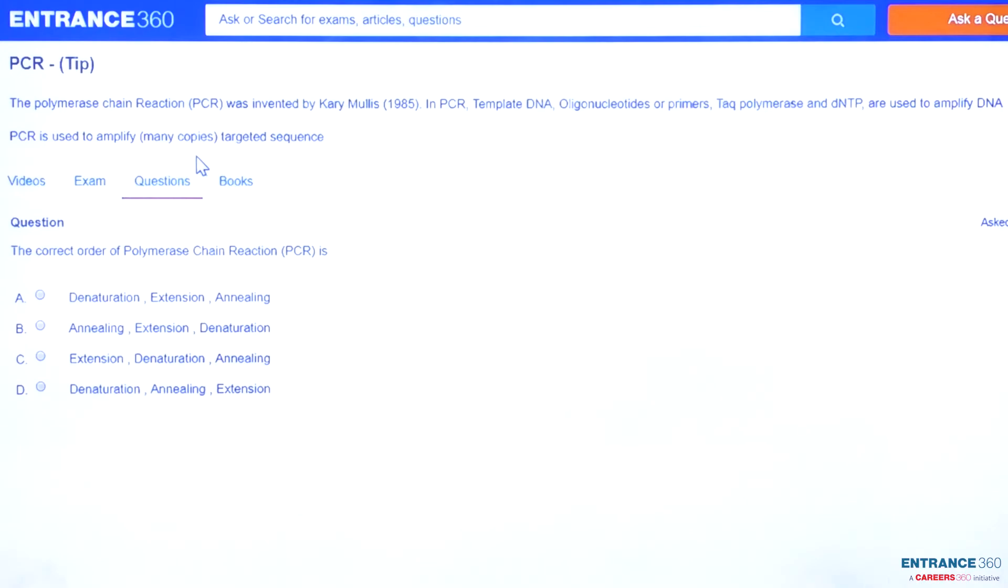First one is denaturation, in which double-stranded DNA is separated into two single strands of DNA. Second one is annealing.